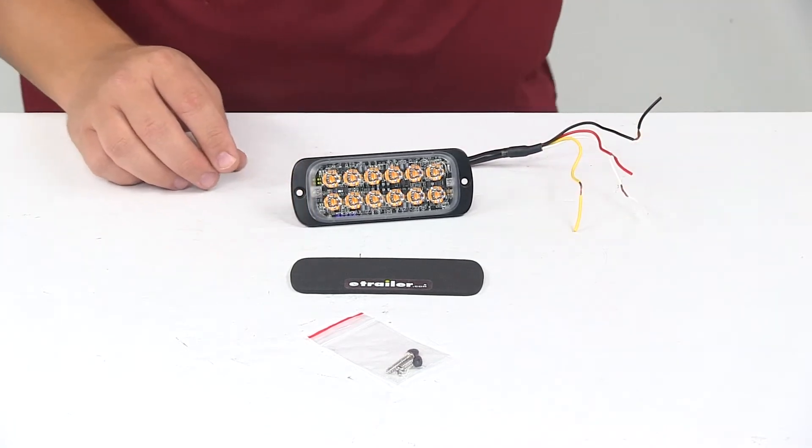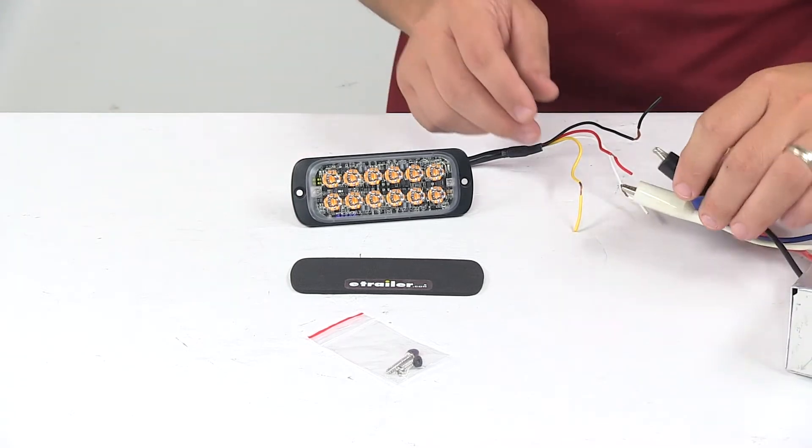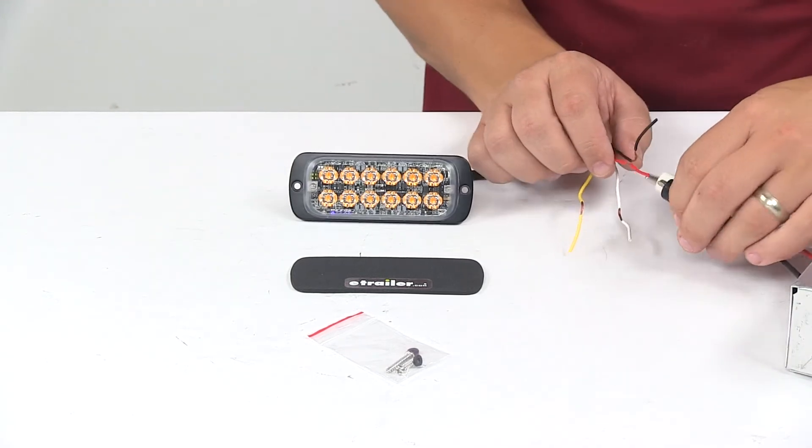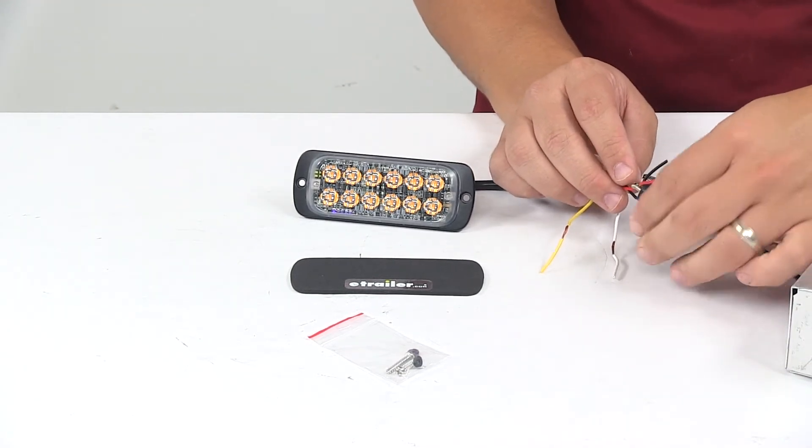We're going to go ahead and hook it up to power. That way you can see what it looks like with power running to it. And then we'll also turn off our overhead lights so you can see it in a low light setting.